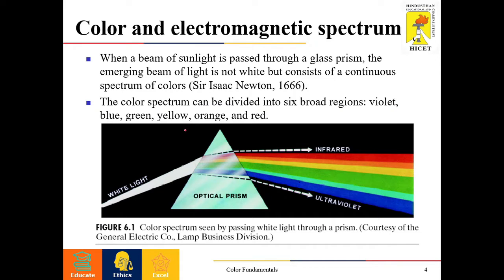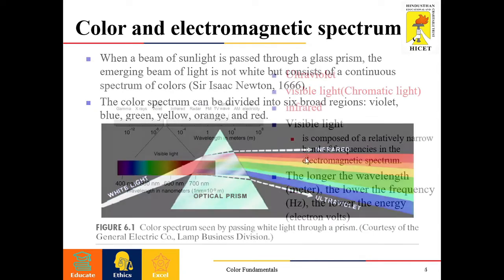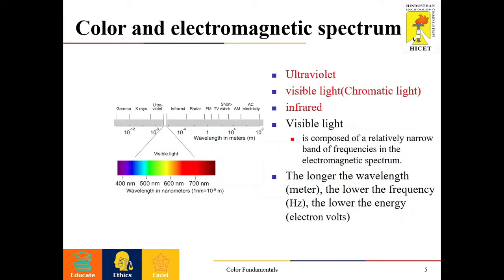These spectrums can be divided into six different regions: violet, blue, green, yellow, orange, and red. Below the range of the violet band we have ultraviolet, and above it we have infrared band. In between infrared and ultraviolet, we have our visible light.